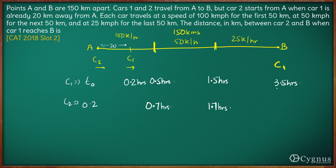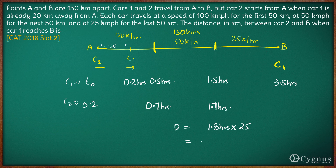The time remaining is 3.5 minus 1.7, which is 1.8 hours. Car 2 will travel for another 1.8 hours in the last segment at 25 kilometers per hour. The distance traveled is 25 times 1 plus 25 times 0.8, which equals 25 plus 20, totaling 45 kilometers.